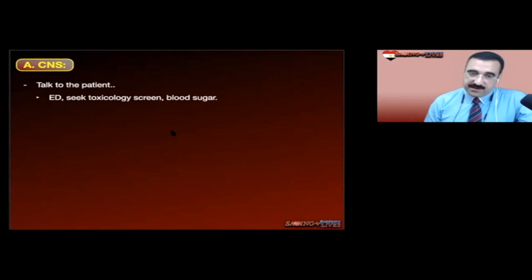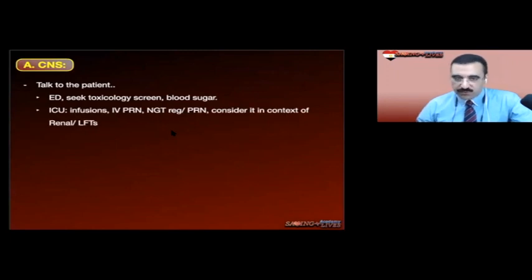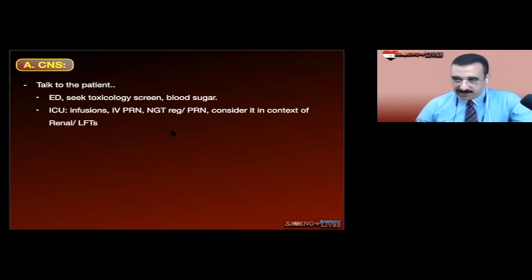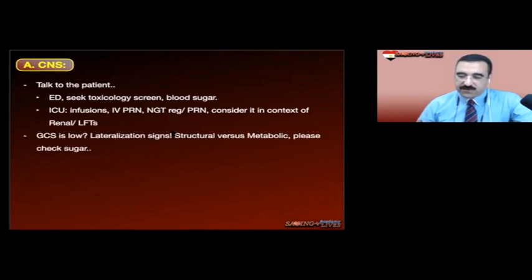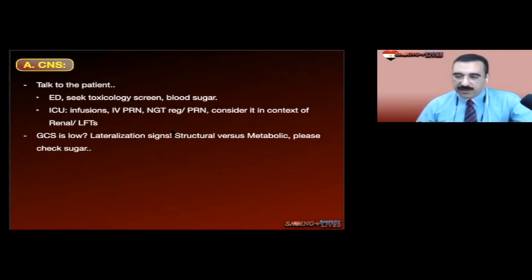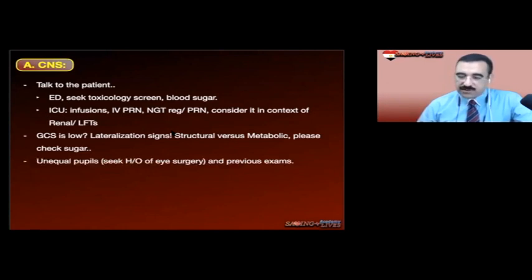Neurologically — CNS: talk to the patient. In the emergency department, always seek toxicology screening and check blood sugar. In ICU, check what infusions are running — midazolam, morphine, propofol. Consider sedation drugs in the context of renal and liver profile: a patient on midazolam for a few days with renal impairment will take longer to recover neurologically. If GCS is low, is it a metabolic disorder or structural problem? Look for lateralizing manifestations — unequal pupils, one-sided weakness — to guide you toward a structural problem.